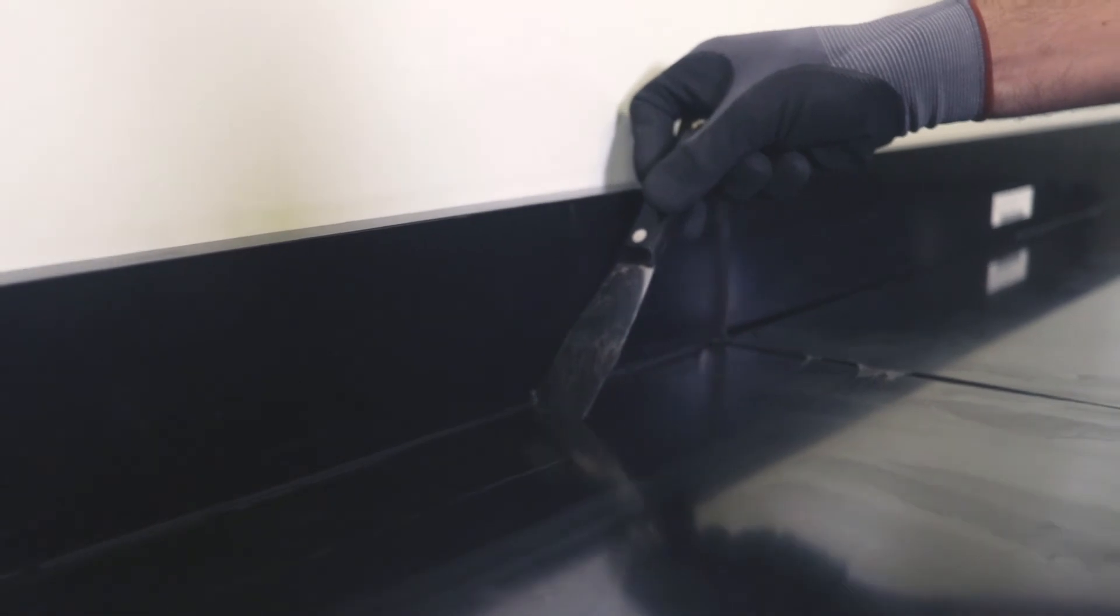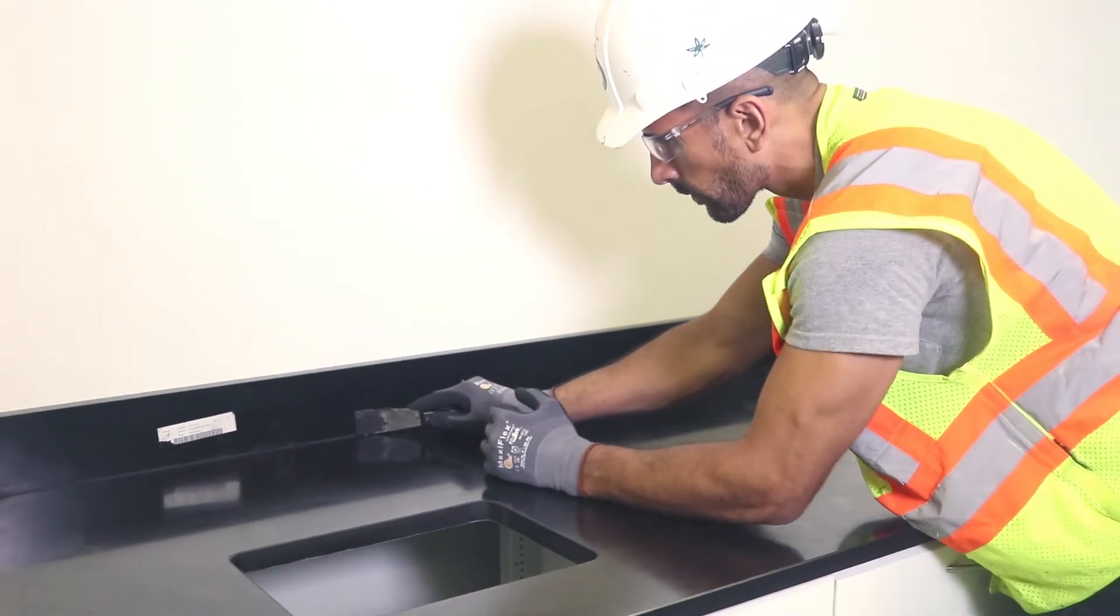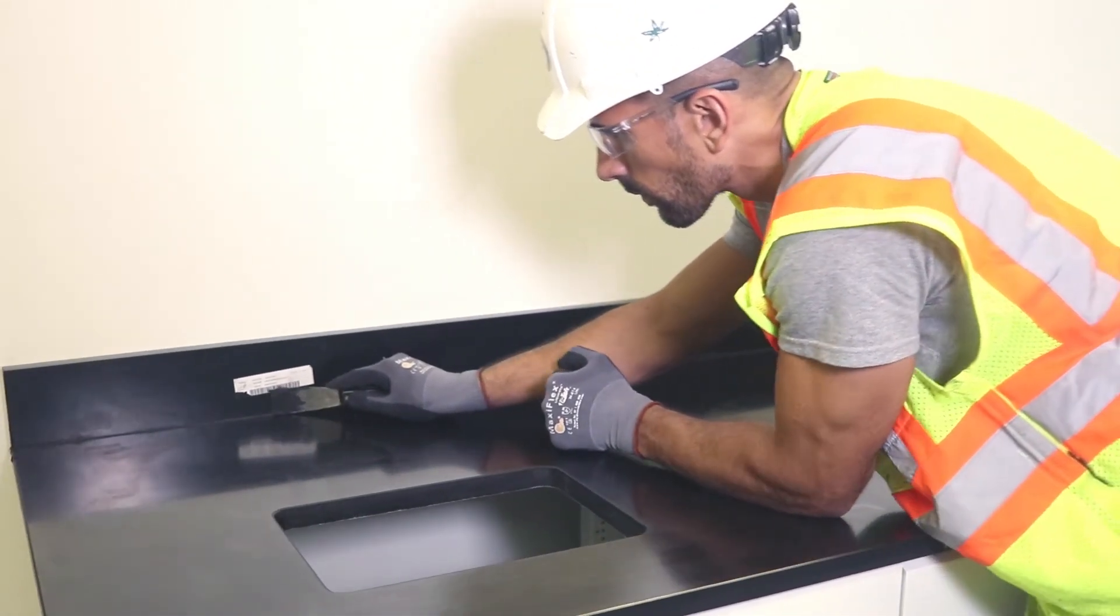Once the splashes are in place, excess cement will be pressed out of the sides. Use a putty knife to remove this excess and reapply it to the next splash.